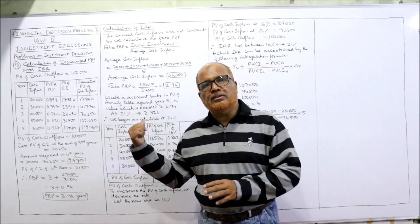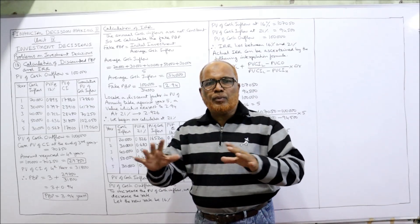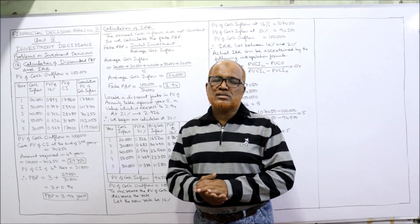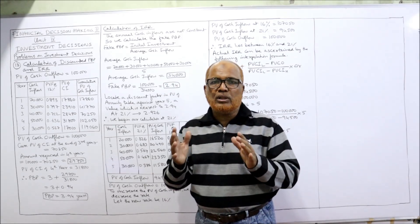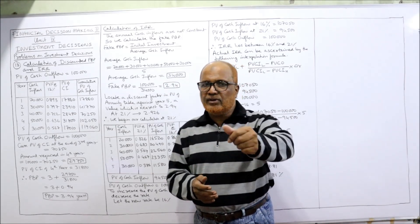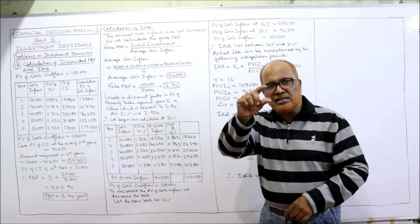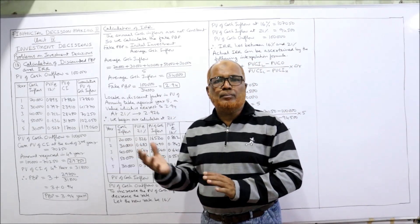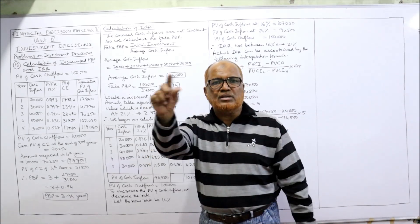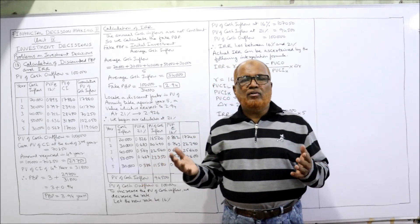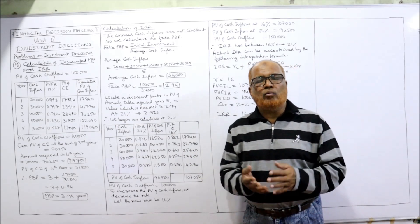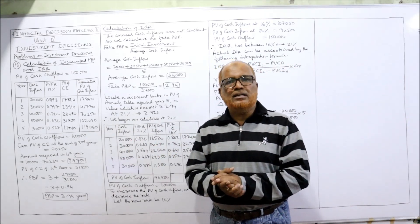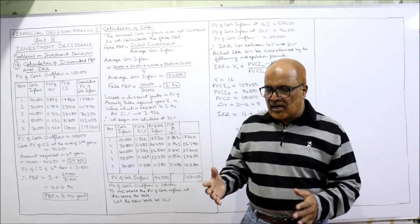Two more problems are left — that is 13 and 14. In this video I'm going to cover the thirteenth problem. All the problems are related, so if you join in between you may not be able to understand. My suggestion: watch all the videos. Go to the playlist, select the subject financial decision making, select the topic capital budgeting. Watch all the videos — understand what is NPV, IRR, payback period, ARR, profitability index.